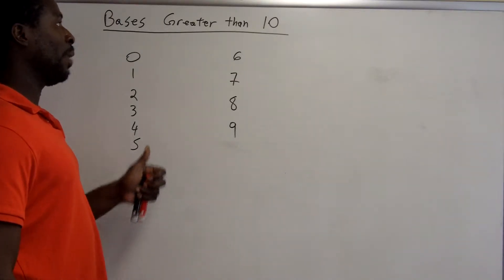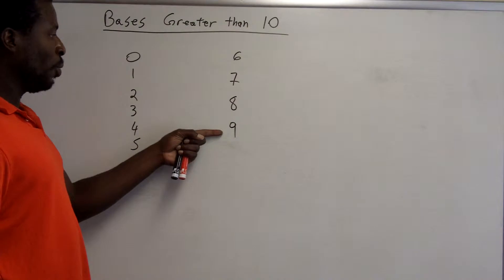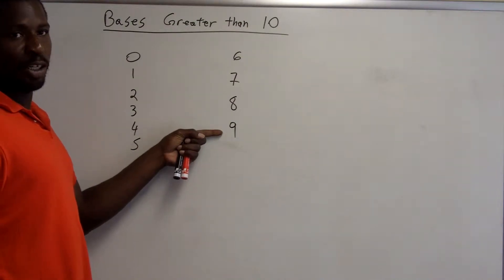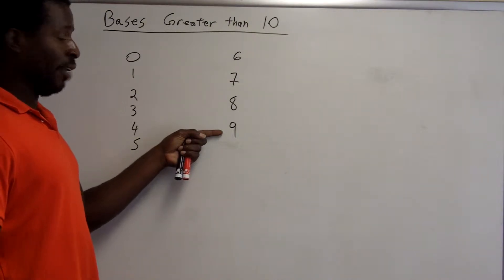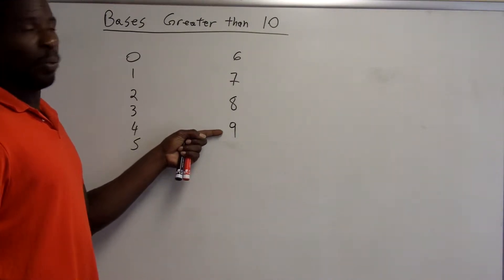So if your system has a base greater than 10, what do you do once you get to 9? Because you're going to need a unique single symbol to represent all the numbers after 9 up to your base.